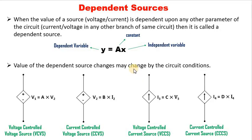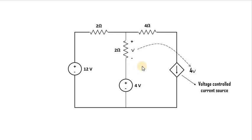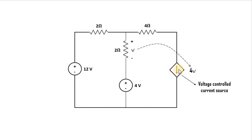Let us understand this with an example circuit. There is a 2-ohm resistance, and the voltage across it is shown with polarities as V. A dependent source is connected in another branch — it is a current source whose value is controlled by a voltage, so it is a voltage controlled current source. It is multiplied by 4, meaning whatever voltage drop occurs across this resistance, 4 times that value will be the value of this current source. This is how a dependent source works in a circuit.